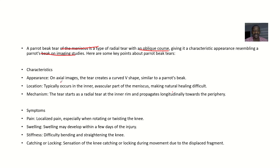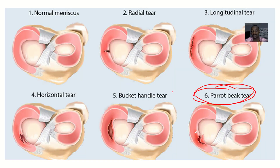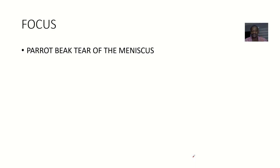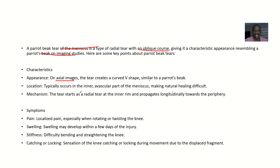The characteristic appearance on axial image shows the tear in a V-shape, similar to a parrot-beak. Location-wise, it occurs in the inner, avascular parts of the meniscus, making natural healing difficult.